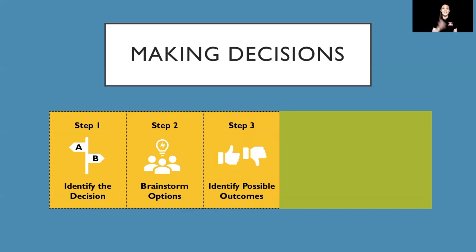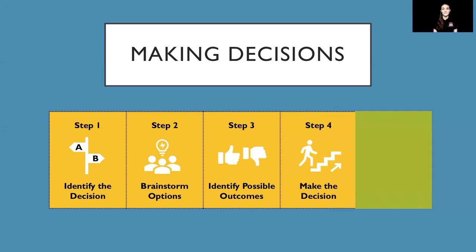Step three focuses on identifying the possible outcomes. If I choose option one — picking my best friends — a possible outcome is we have a great time hanging out while working on the posters, but the artwork may not turn out so good. A possible outcome of option two — choosing those two students with great artwork — is I may not have as much fun, but we get the job done and the artwork turns out exactly as expected. Step four is making your decision. Because this assembly is so important and my decision can affect not only the leadership class but the entire school, I'm going to go with option two and pick the two students whose artwork is spot on.